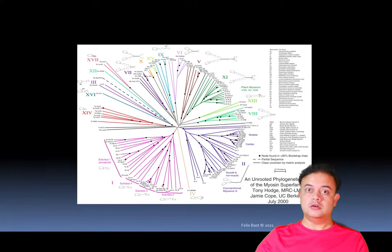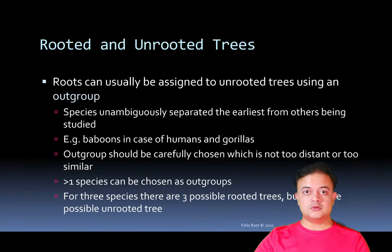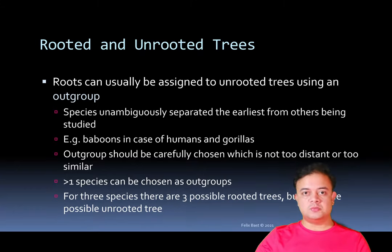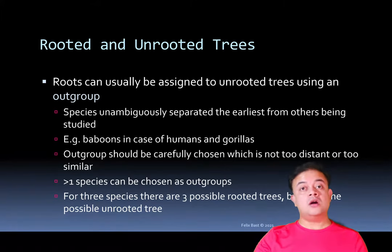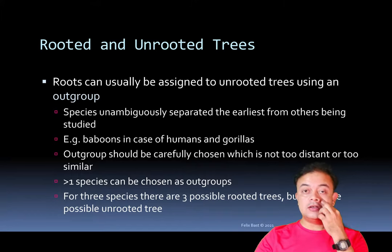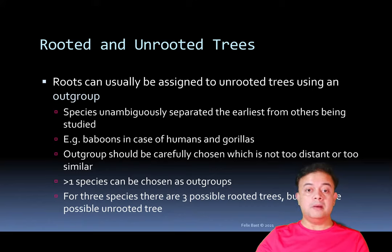Roots can be assigned to unrooted trees using an outgroup — that is the most common way. The outgroup is an external taxon, not part of the ingroup. For example, if you are studying angiosperms, a gymnosperm could be an outgroup — something obviously outside is the outgroup. By deliberately adding one outgroup when constructing the tree, you know where to place the root and can convert an unrooted tree to a rooted one. A species unambiguously separated earliest from the others being studied is called the outgroup — for example, baboons in the case of humans and gorillas.